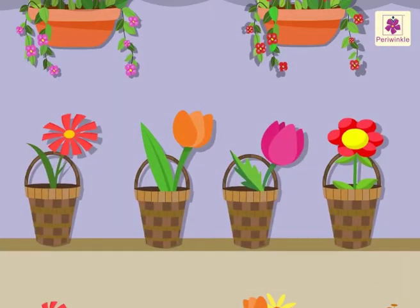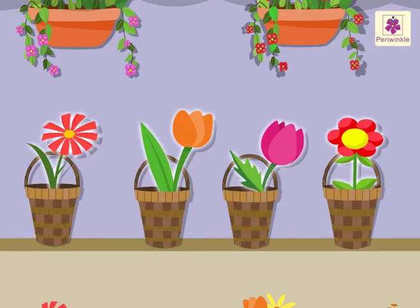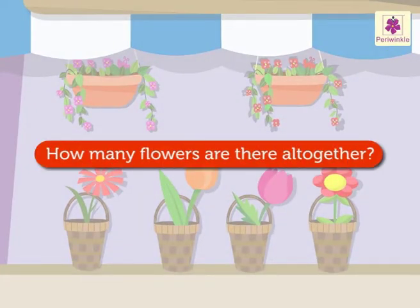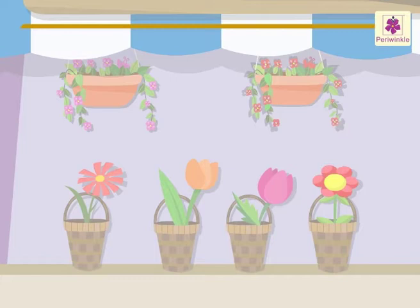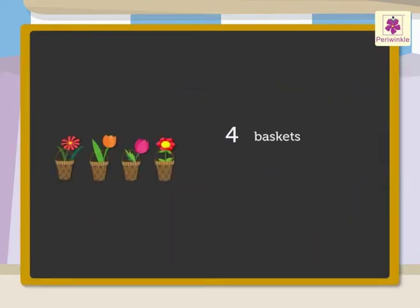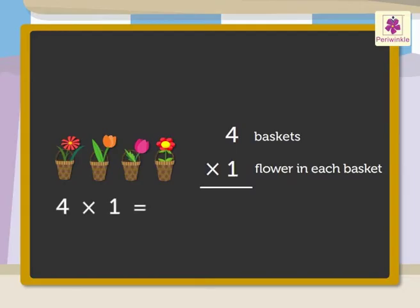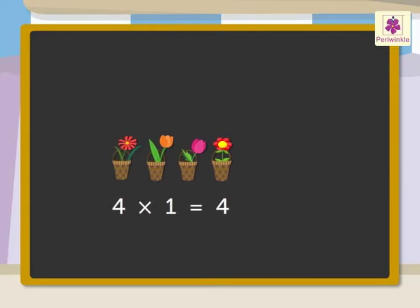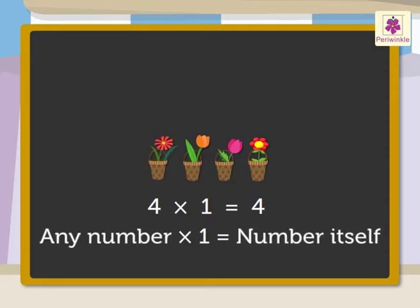Look. There are four flower baskets here. Each basket contains one flower in it. How many flowers are there altogether? Here, there are four baskets and one flower in each. Now, four into one is equal to four. So, here we multiplied the number four by one and we got the answer as four. That is, the number itself.